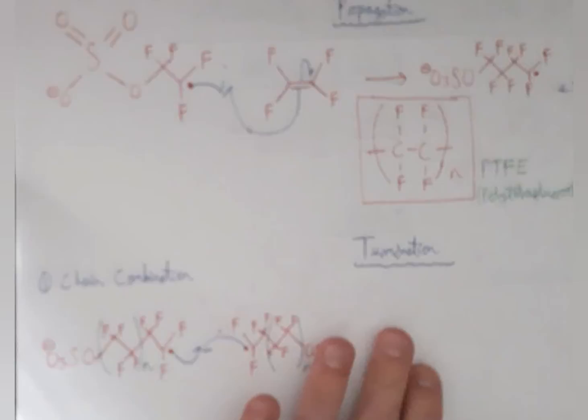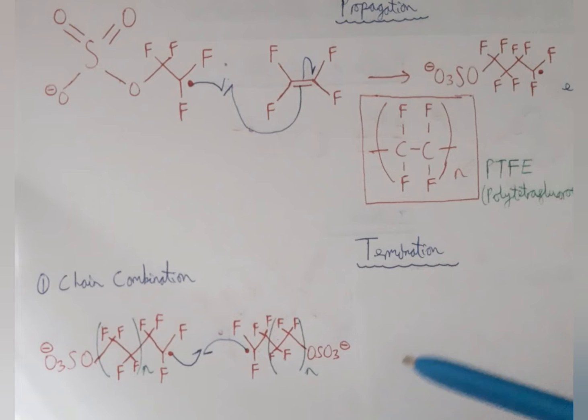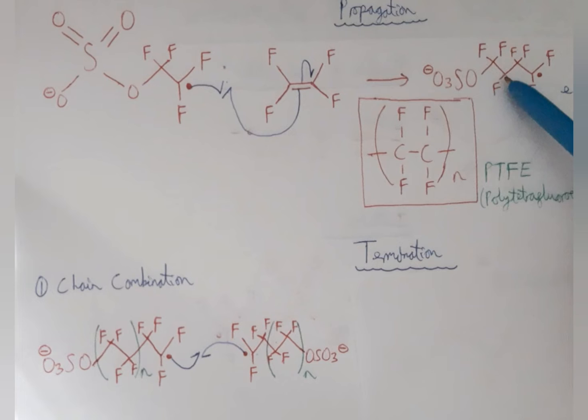This radical can then go on to react with more monomer units, more alkene molecules in propagation. This can happen many, many times. In this example, we get a long fluoroalkyl chain which carries on and on until we quench the reaction, terminate it, which we'll discuss in a moment. In this example, we're forming polytetrafluoroethylene, PTFE, which is an example of a forever chemical or PFAS, which we'll discuss later.